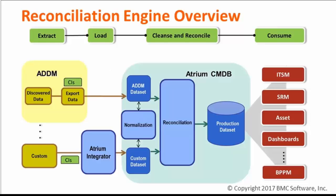Reconciliation is part of a bigger process — the process by which multiple data sources are combined into a single golden data set to create a current and accurate description of your business environment. When multiple data providers load data into several data sets of BMC HMCMDB, you need a reconciliation process to resolve conflicts from different data sources and create one complete and correct production data set. Your source data — CSPs, spreadsheets, databases — are loaded into the BMC HMCMDB through input tools like agent motivator or the ADDM to CMDB synchronization process.